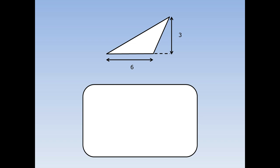Let's find the area of this triangle. The base is 6 and the perpendicular height at right angles to the base is 3. First of all, write out the formula: area is base times perpendicular height divided by 2. Then we fill in the numbers — the base is 6 and the height is 3. 6 times 3 is 18, and 18 divided by 2 is 9 centimetres squared.